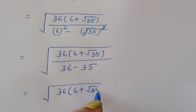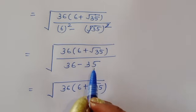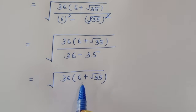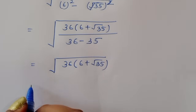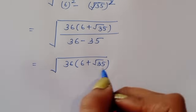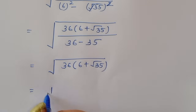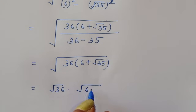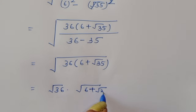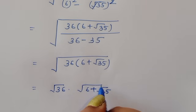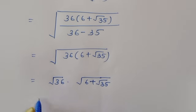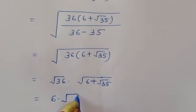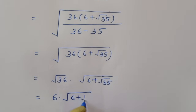Since 36 minus 35 equals 1, the expression simplifies to 36 times (6 plus square root of 35). We can now separate this term and write it as square root of 36 times square root of (6 plus square root of 35).